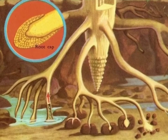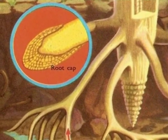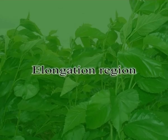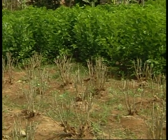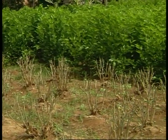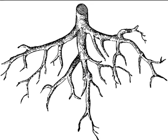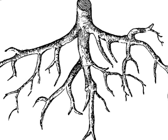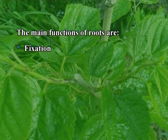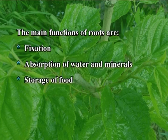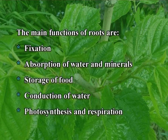Regions of roots: morphologically, four distinct regions are present in roots. Root cap: a terminal structure that protects the tender apex of the root. Meristematic zone: cells are very small and thin-walled, divide repeatedly and increase cell number. Elongation region: cells proximal to the meristematic zone undergo rapid elongation and enlargement, responsible for rapid growth of roots. Maturation region: cells proximal to the region of elongation gradually differentiate and mature; root hairs are present in the maturation zone. Main functions of roots are fixation, absorption of water and minerals, storage of food, conduction of water, photosynthesis, and respiration.